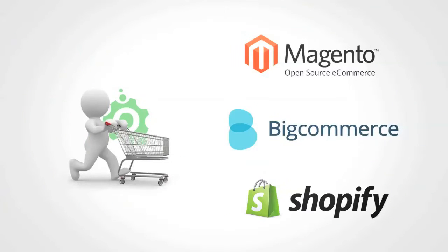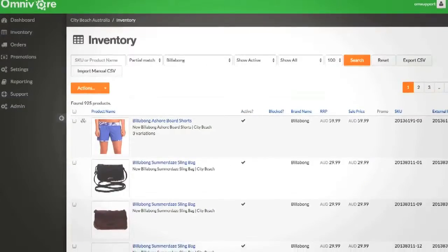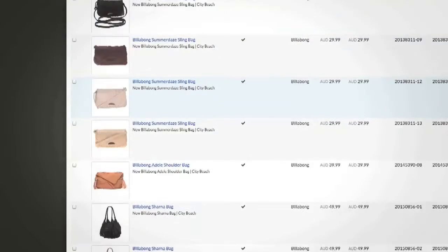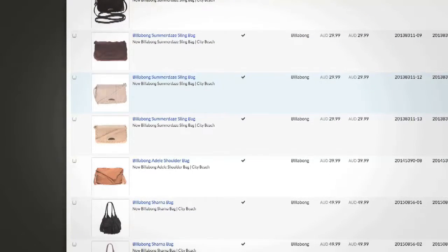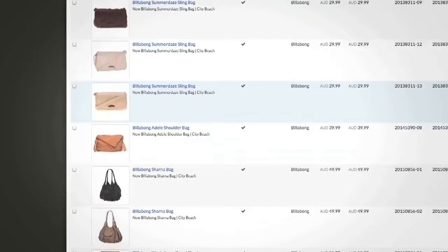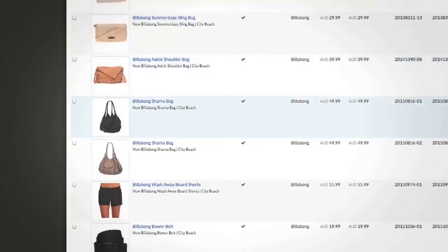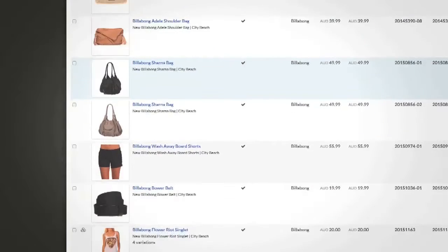We integrate to any online shopping cart — for example Magento, BigCommerce, and Shopify — to extract all your product and inventory data. We import them into Omnivore where we reformat and send them to their final destinations such as eBay.